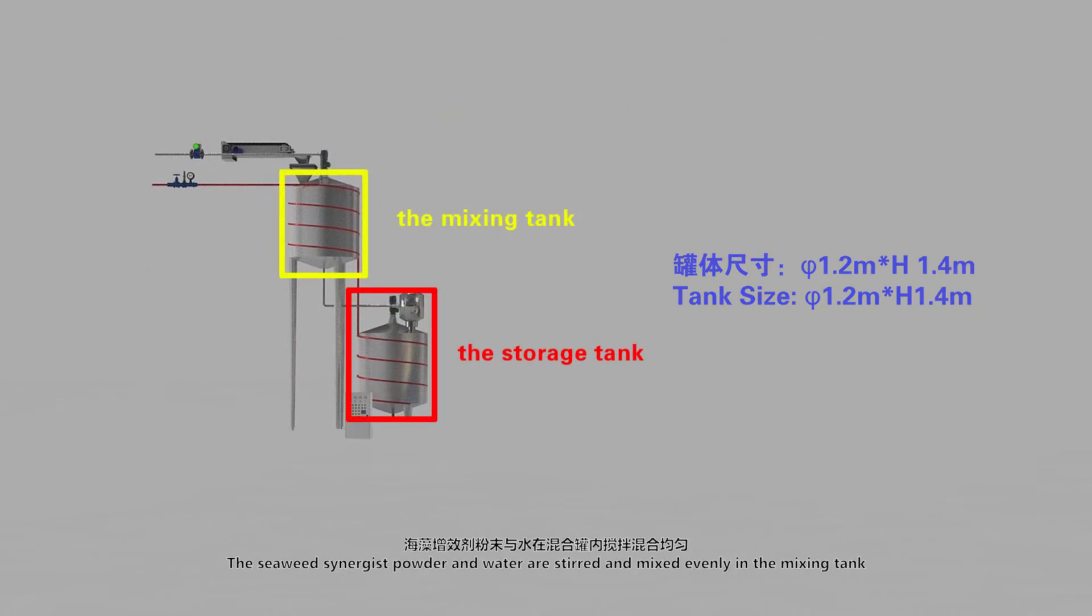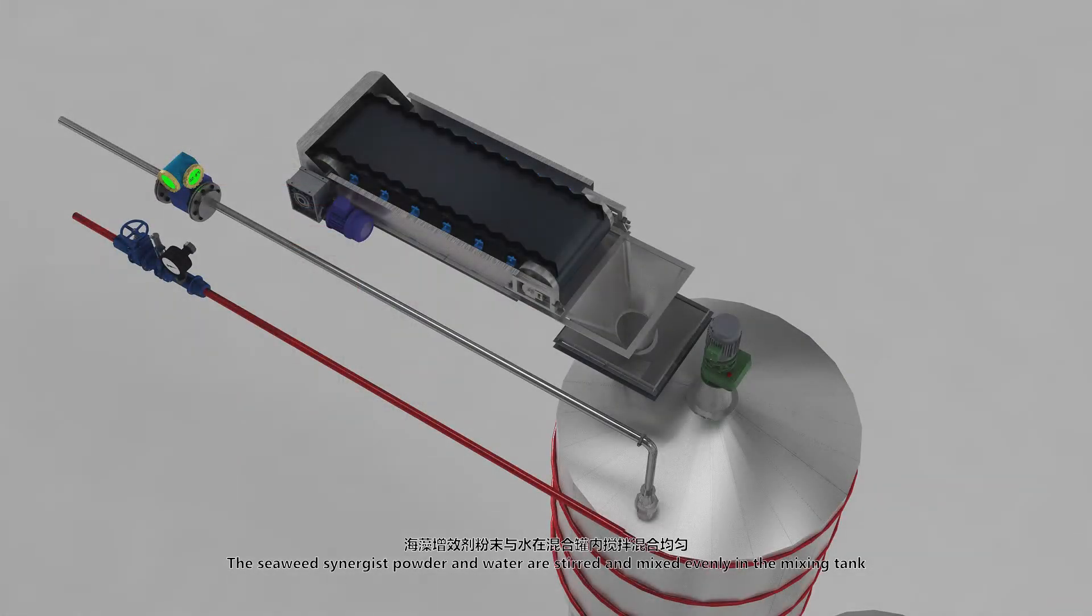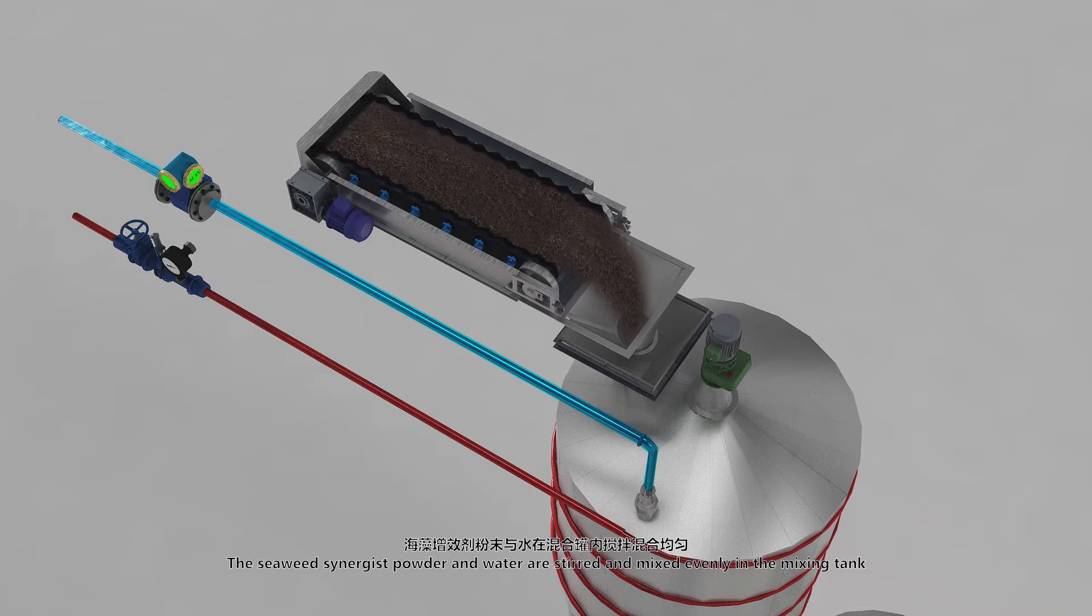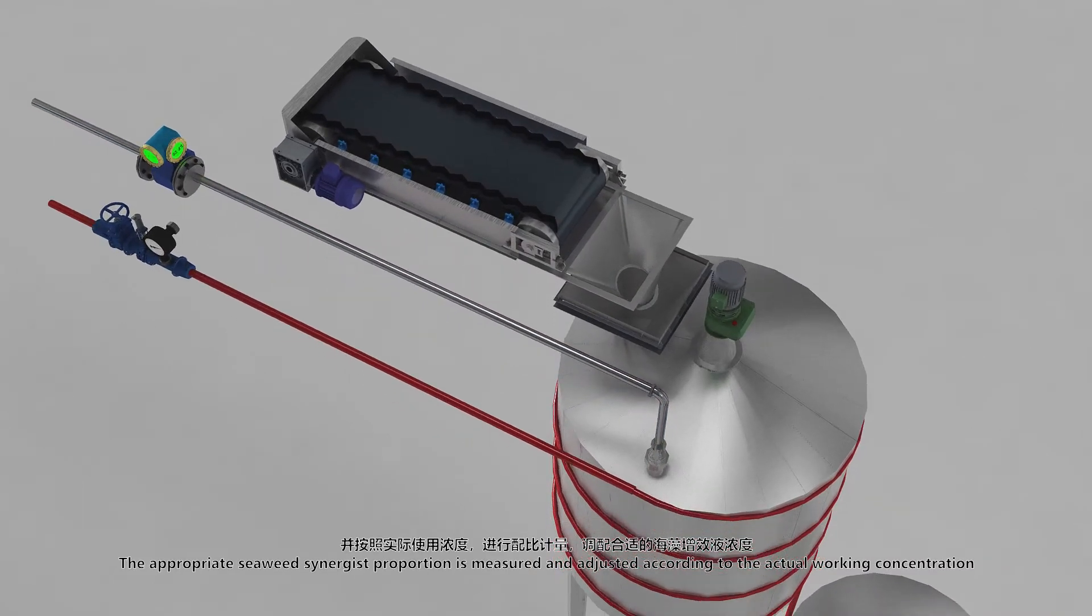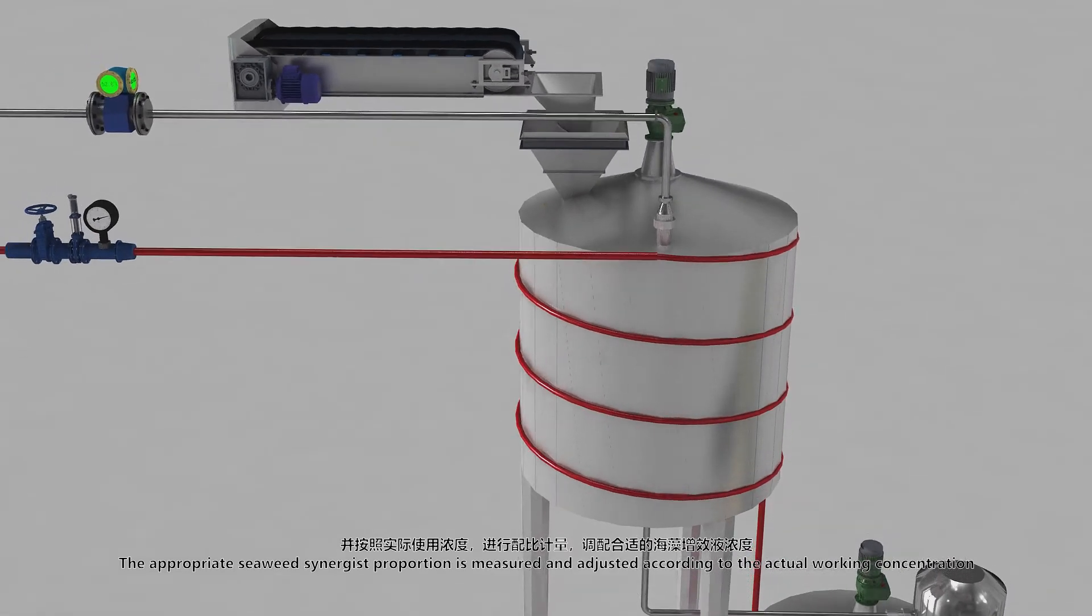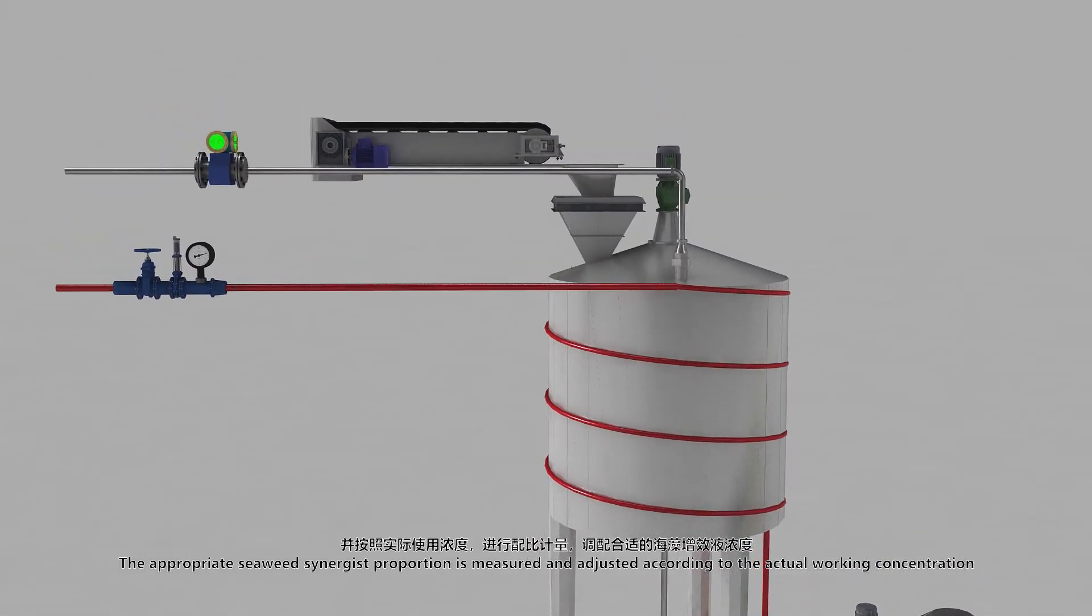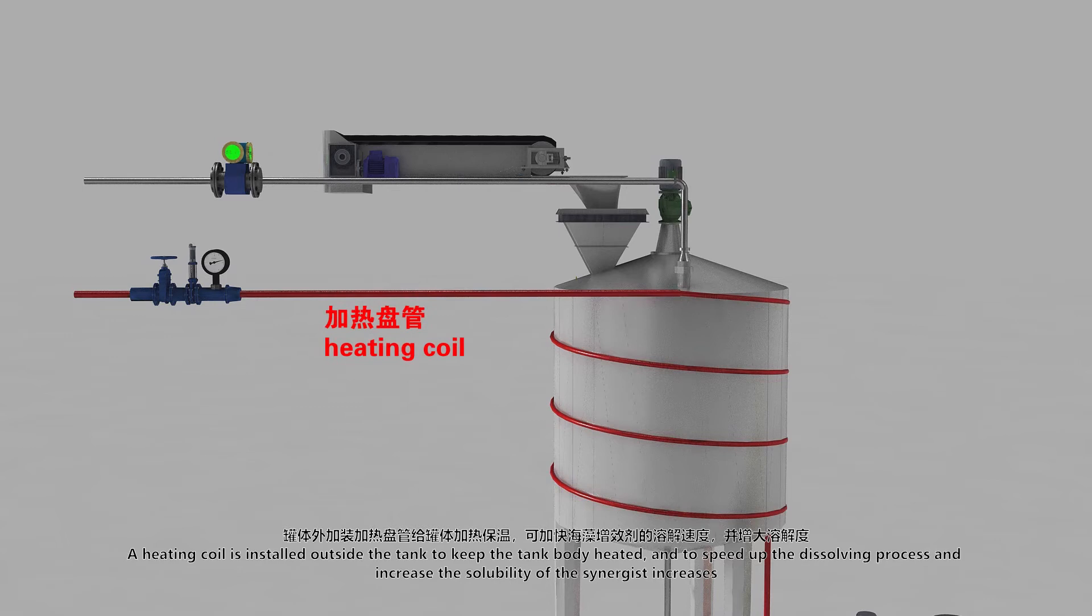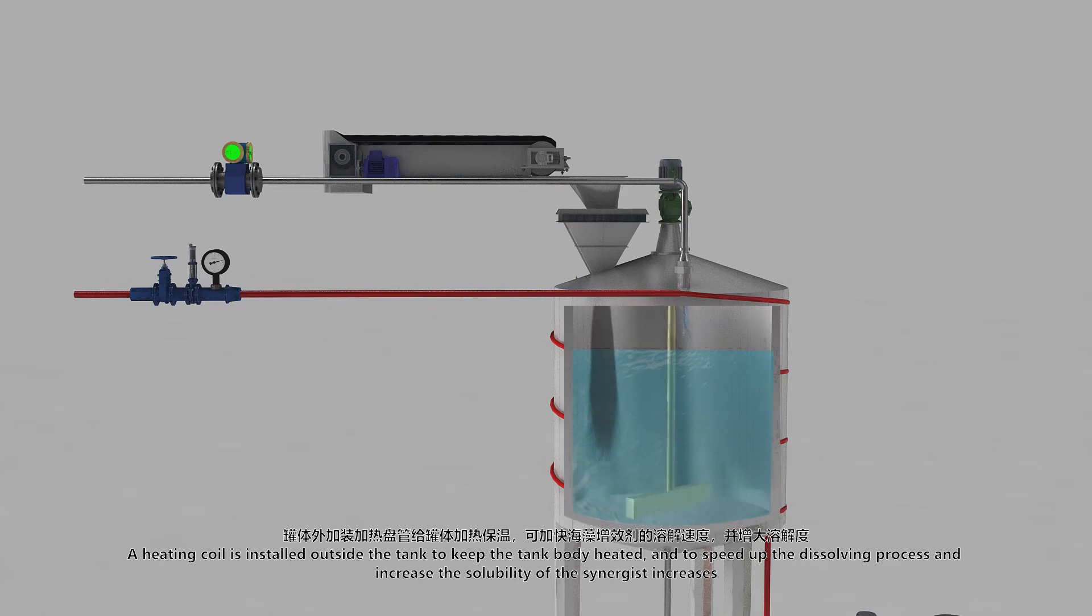The seaweed synergist powder and water are stirred and mixed evenly in the mixing tank. The appropriate seaweed synergist proportion is measured and adjusted according to the actual working concentration. A heating coil is installed outside of the tank to keep the tank bed heated and to speed up the dissolving process.